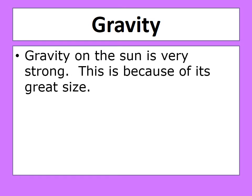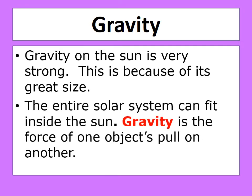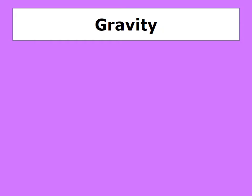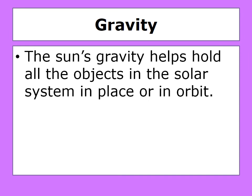Gravity. Let's talk about gravity. Gravity on the sun is very strong because of its great size — the entire solar system can fit inside the sun. Gravity is the force of one object's pull on another. The sun's gravity helps hold all the objects in the solar system in place, or in orbit.